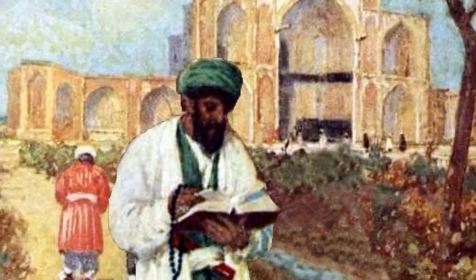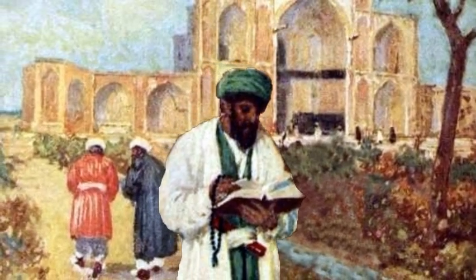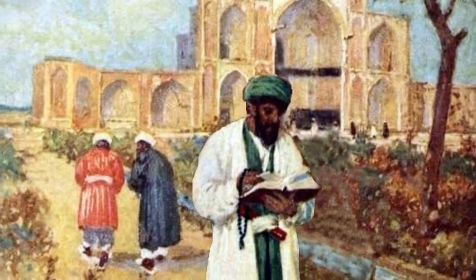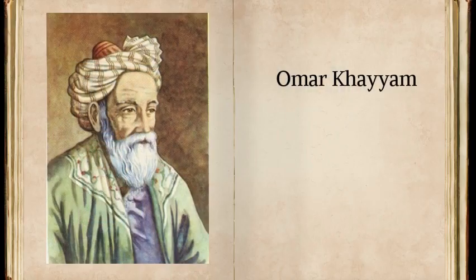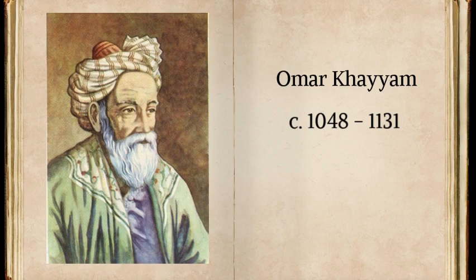Within 50 years after the publication of al-Khawarizmi's book, Islamic mathematicians had largely adopted his algebraic language. For example, Omar Khayyam, a Persian mathematician of the 11th century, extended al-Khawarizmi's work to classify and solve cubic equations using geometry. Unlike al-Khawarizmi, he was not able to find numerical formulas to solve cubic equations.